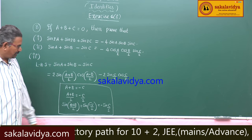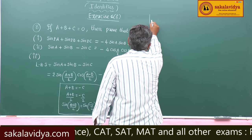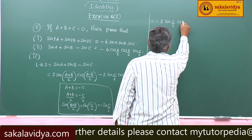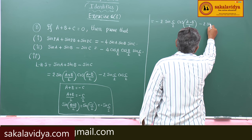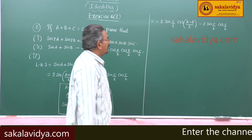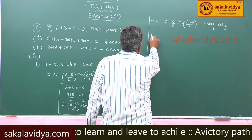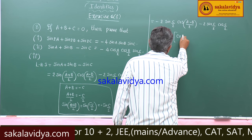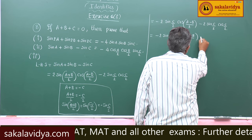Replacing sin((A+B)/2) with -sin(C/2), the expression becomes: (-sin(C/2)) · 2cos((A-B)/2) minus 2 sin(C/2) cos(C/2). Taking -2 sin(C/2) as common factor, we get -2 sin(C/2) [cos((A-B)/2) + cos(C/2)].